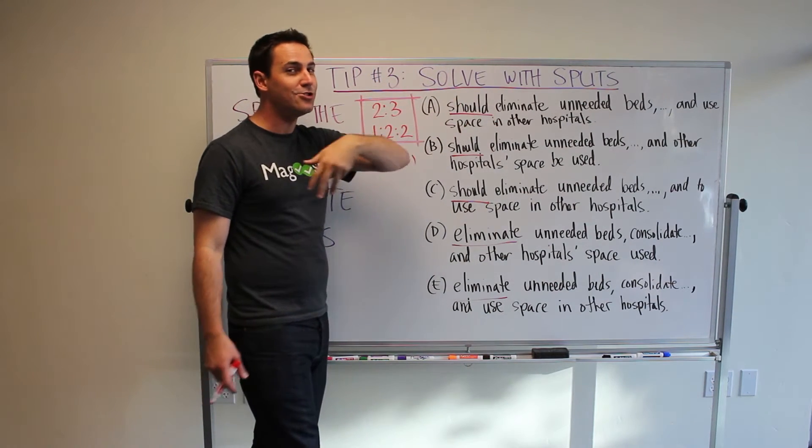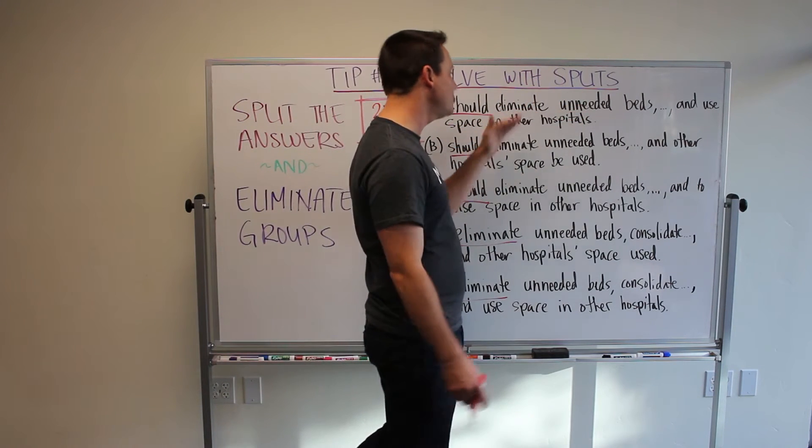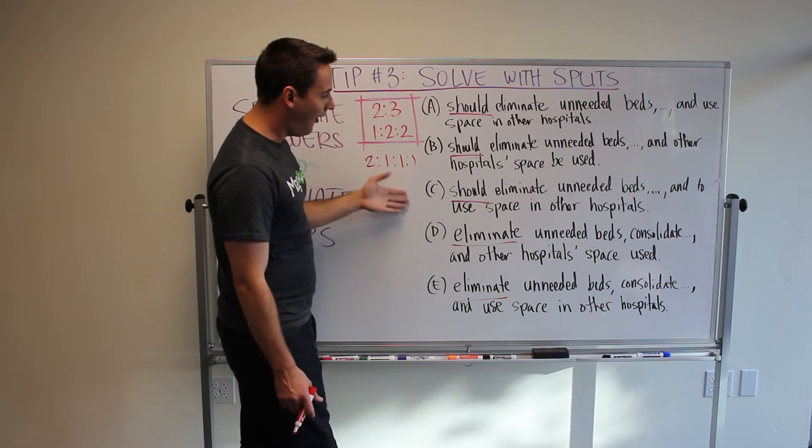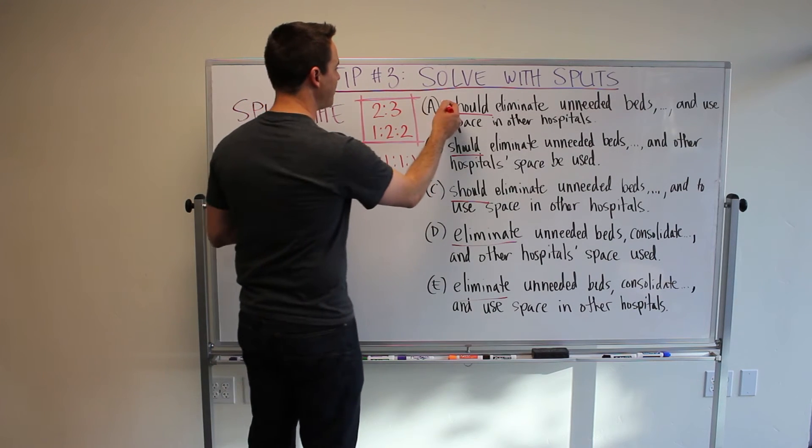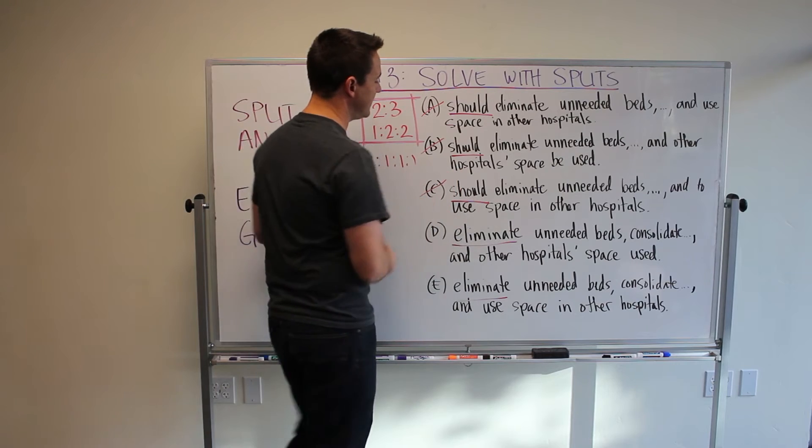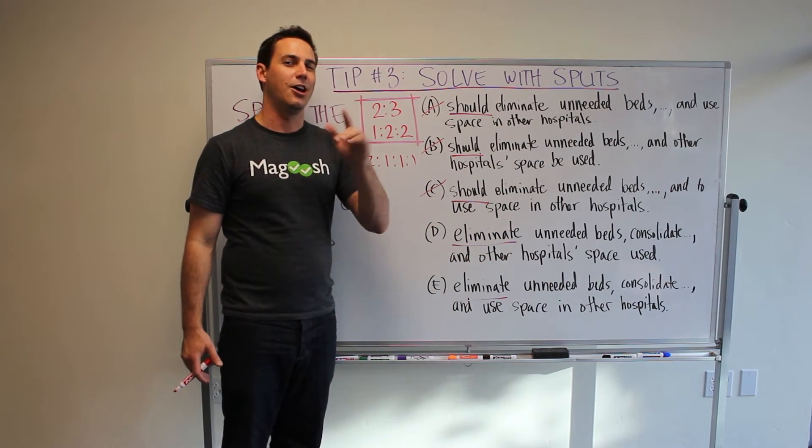If you're going to have two shoulds, you should have another should. You should have should, should, and should. But you can see, all three of these don't have a third should. So, we can actually eliminate A, B, and C. Also, there's another thing that's left out of here, I'll mention that in a second. Okay.